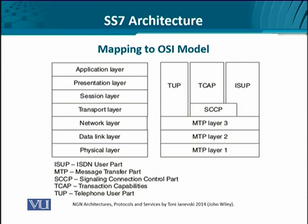Now let's look at how the SS7 protocols are mapped onto the OSI model. Going from bottom upwards, we have MTP layer one, layer two, and layer three, which correspond to the physical, data link, and network layers. Then, from the transport layer up to the application layer, we have protocols such as the Telephone User Part, the Transaction Capabilities Part, the ISDN User Part, and the Mobile Application Part. These application-layer protocols cover the scope of more than a single layer — in fact, they broadly cover four layers.